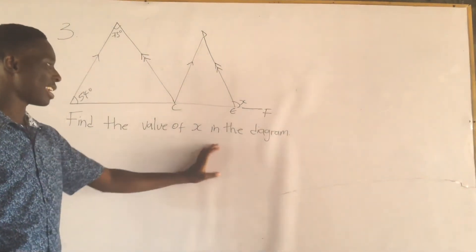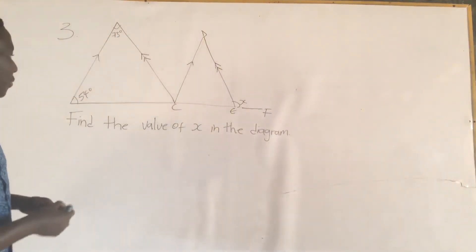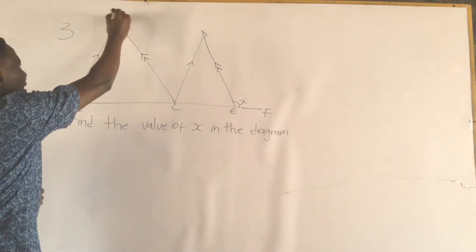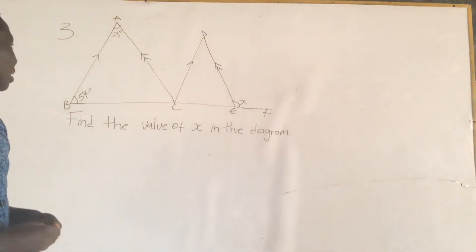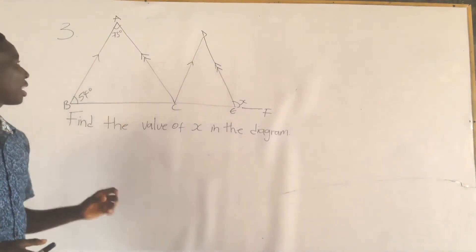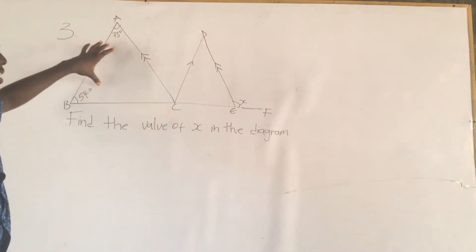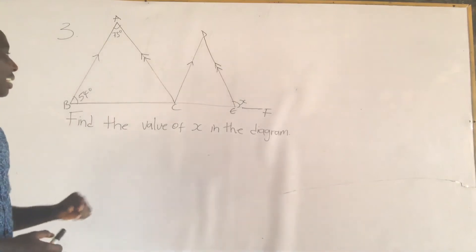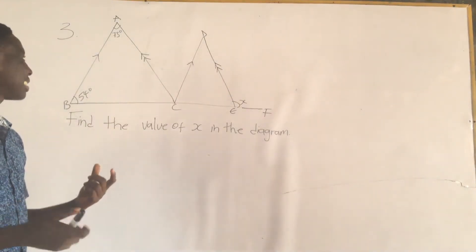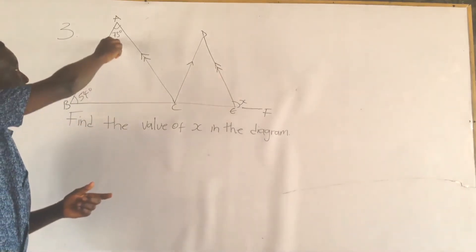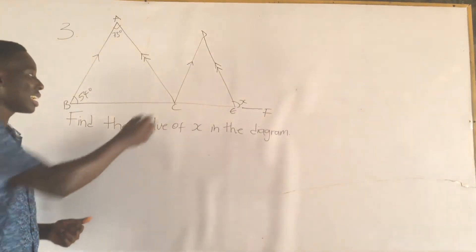Find the value of x in the diagram. We have to find the value of x. Looking at the diagram, we have two interior angles. There is one property of a triangle which states that the sum of two interior angles of a triangle is equal to the exterior angle.